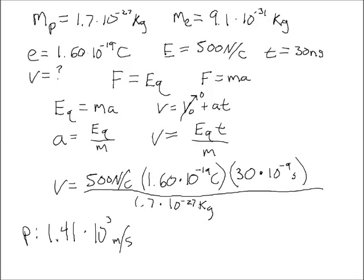For the electron, simply change this number here on the bottom to correspond to the mass of the electron, 9.1 times 10 to the minus 31 kilograms. And you get, for the electron, the speed is 2.64 times 10 to the 6 meters per second.